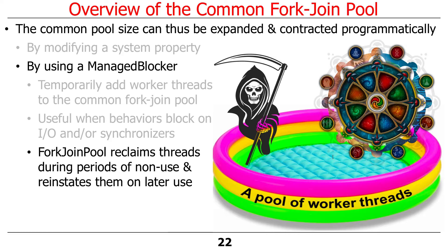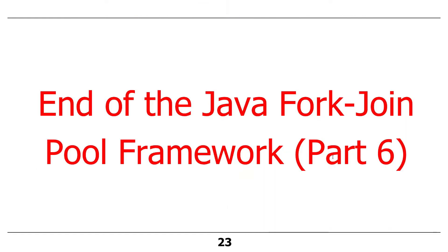That's the common fork-join pool. The key thing to remember is that it's really what you should be using most of the time, because it gives the fork-join pool scheduler a global perspective on the amount of work that needs to be done, thereby keeping all queues and threads as active as possible — which is the whole goal of parallelism. Because you sometimes need more than the default number of cores, the fork-join pool size can be expanded and contracted programmatically either by modifying a global system property or by using managed blockers. Next time, we'll talk about how the fork-join pool managed blocker interface actually works.